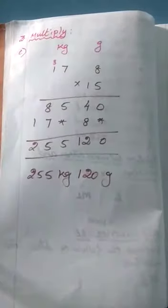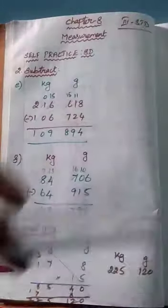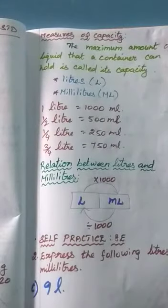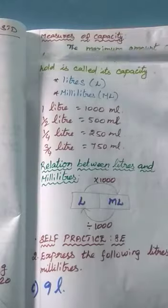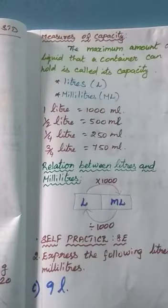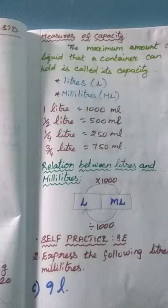Next, we see about measures of liter. In this, we see about measures of capacity. What does capacity mean? The maximum amount of liquid that a container can hold is called capacity. For example, one small bucket contains a certain number of liters — that is the capacity of that bucket. Like that, the quantity a mug can hold is the capacity of the mug.